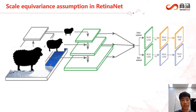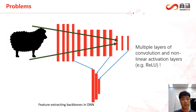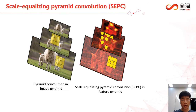Do we have any assumptions when using a shared kernel to extract features of objects in various scales from the feature pyramid? Yes, we have assumed that the feature pyramid is just like an image pyramid, where the original image just down samples multiple times. But clearly this is not the case, since the features have been through multiple layers of convolutions and nonlinear activations in the backbone structure.